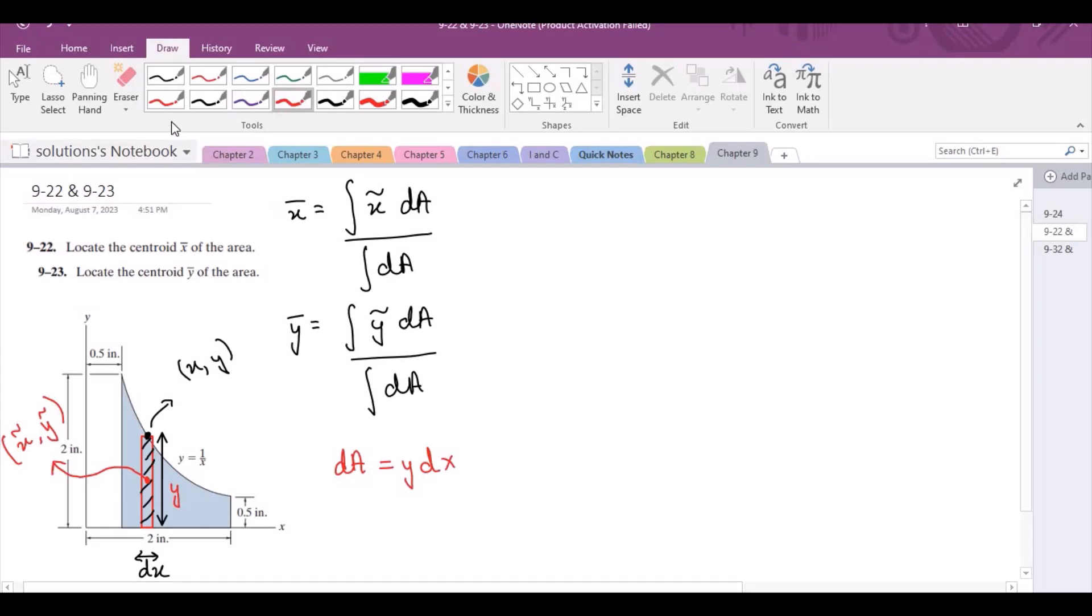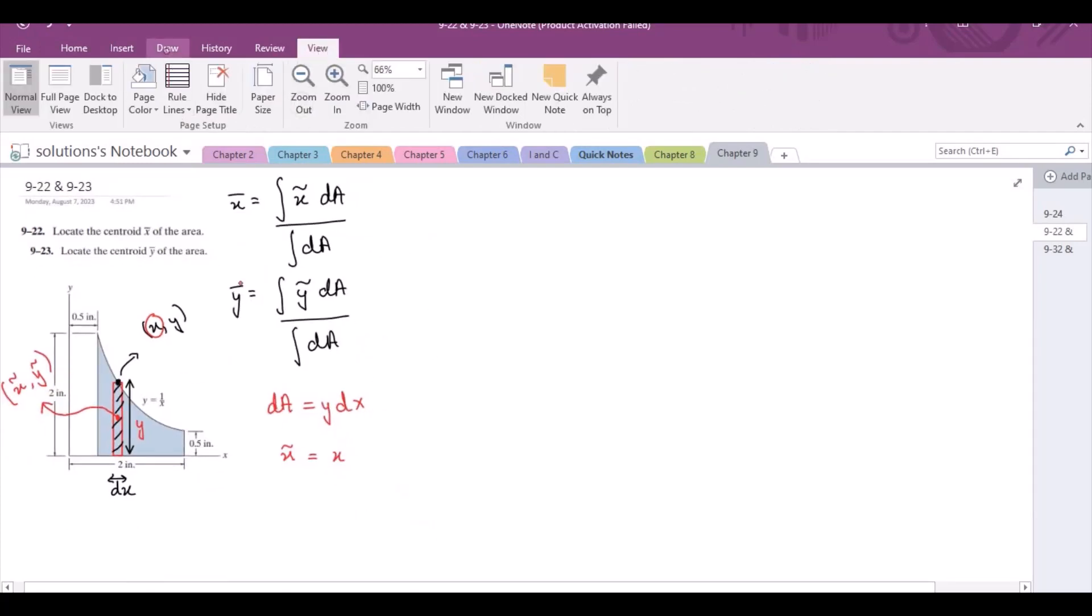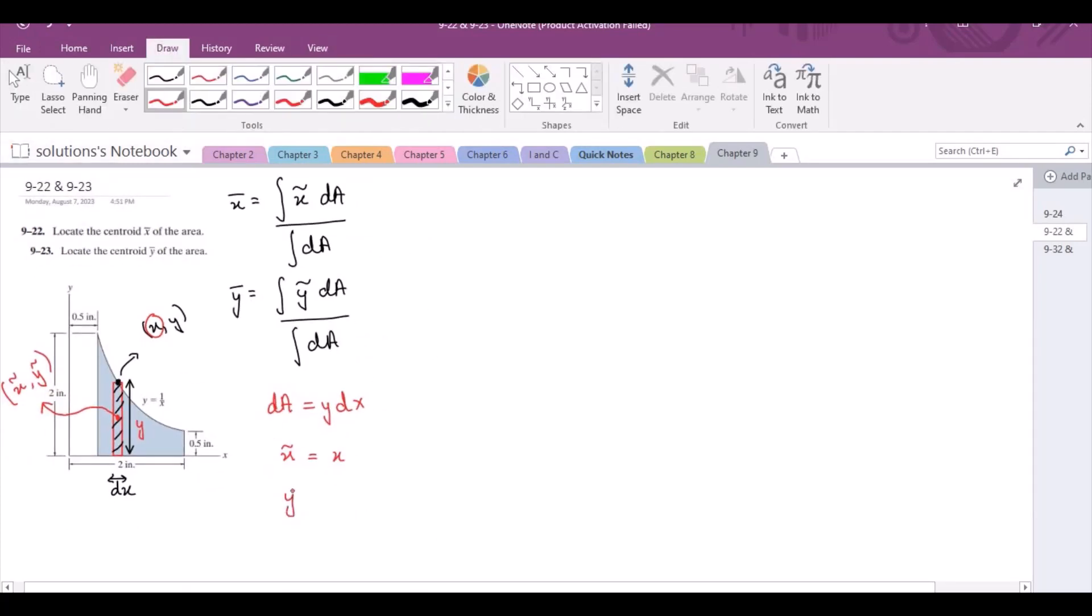Also, if we consider the rectangular strip, then x curly equals x, because x and x curly are both lying on top of one another, whereas y curly equals half of y, because y curly is located halfway through the height.